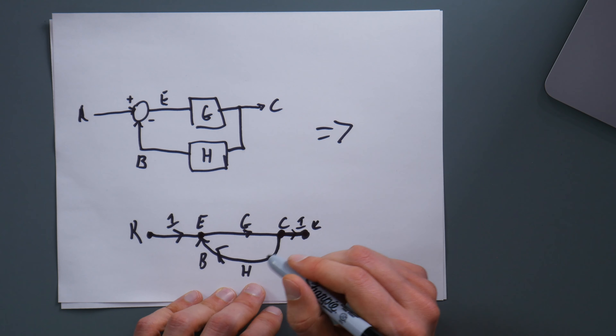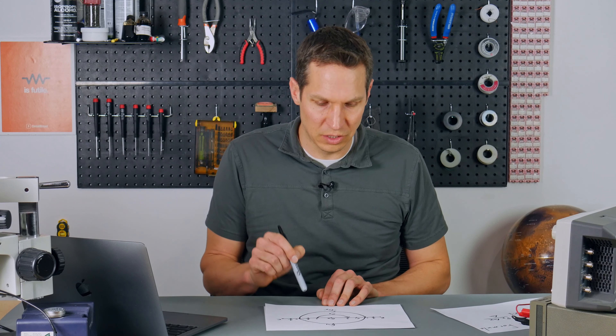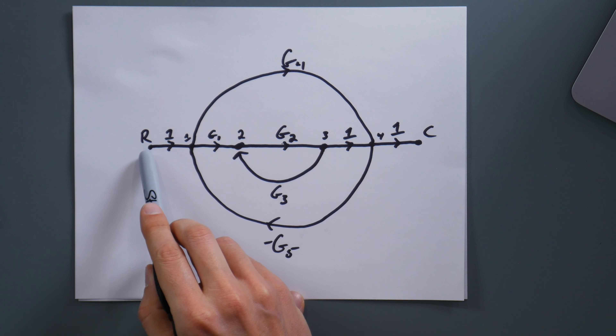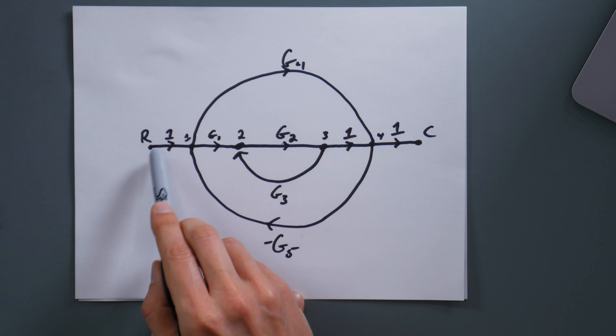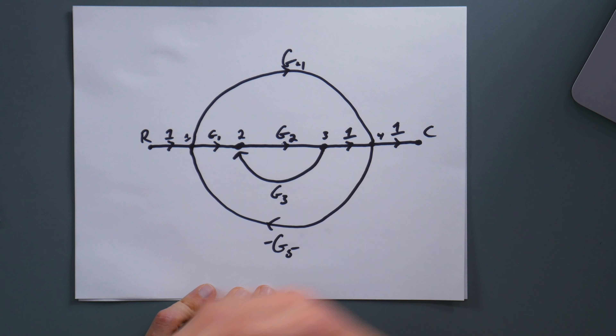The next key term is the path. A path is basically any way you follow these arrows through the system — it can be completely different depending on how the system is set up. Path is fairly intuitive as well.